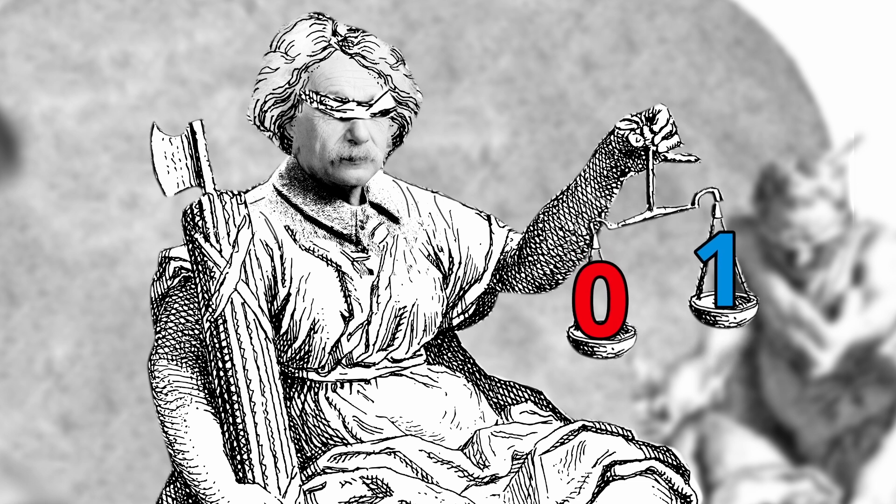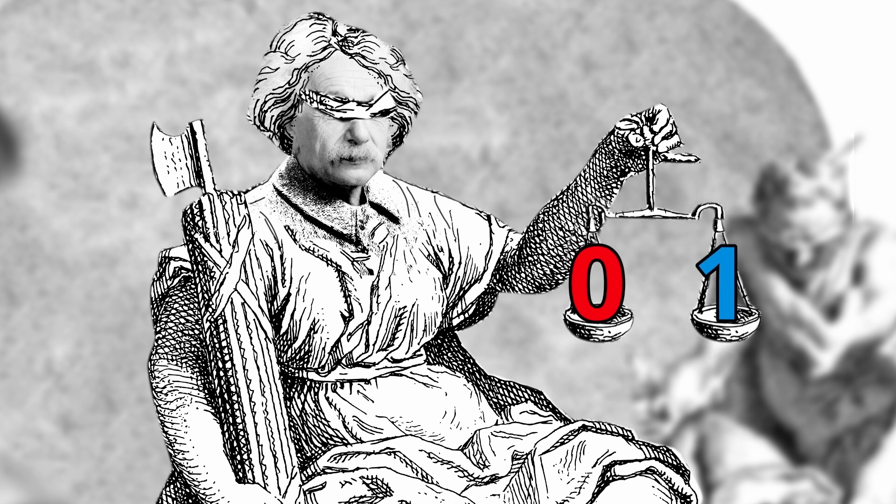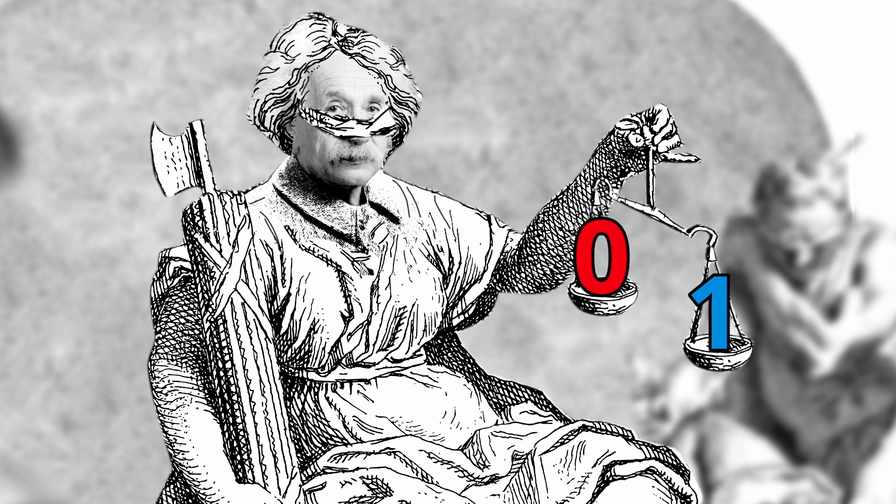For example, we can make it such that the probability of getting a one is twice as likely as getting a zero. This opens up a whole new world of possibilities.